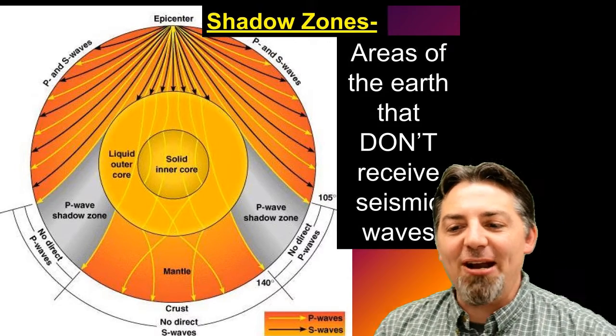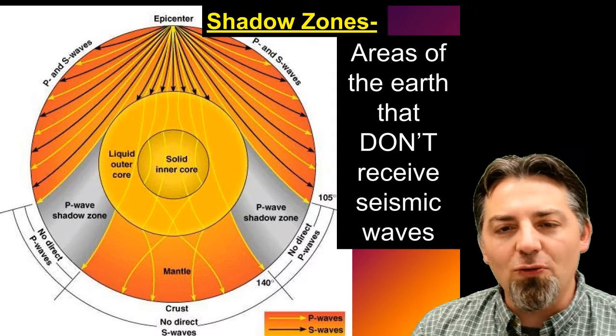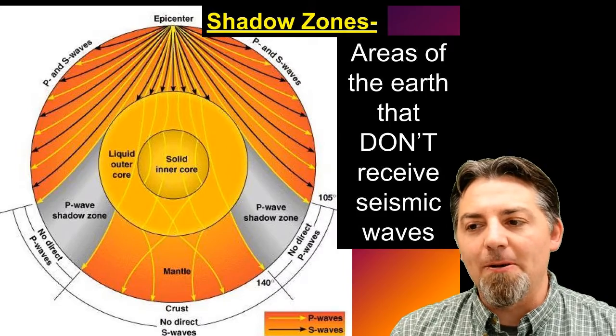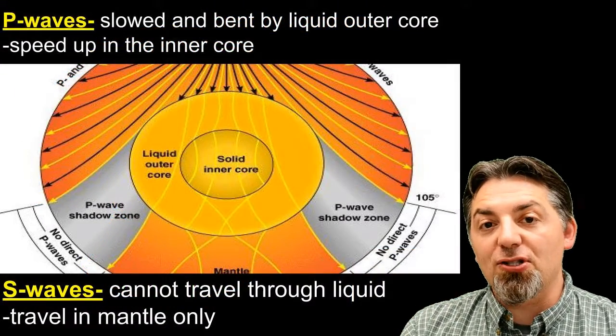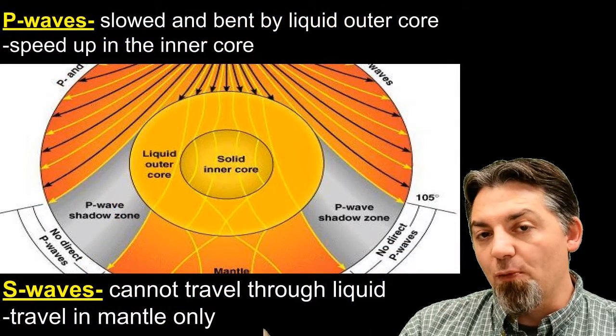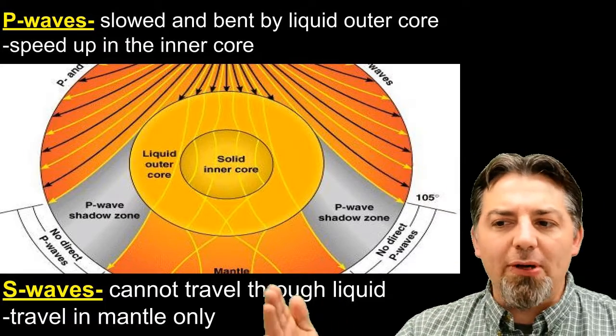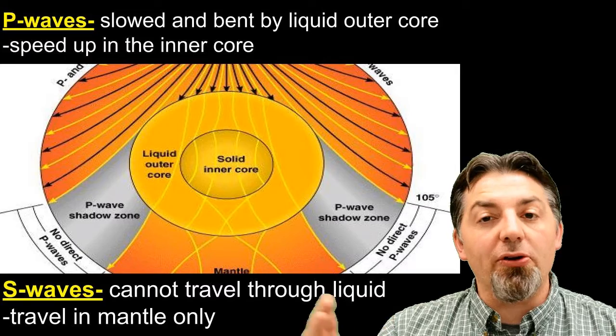Shadow zones are areas of the Earth that don't receive seismic waves from an earthquake. From that quake, there will be certain shadow zones. Again, P waves, they're slowed down. They're bent when they go from one layer to another kind of layer. So when they go from the liquid outer core to the solid inner core, they're going to change speeds.